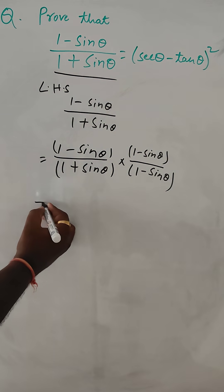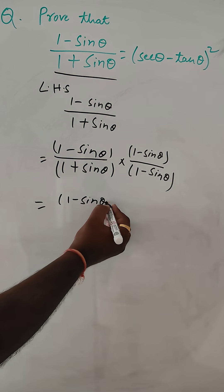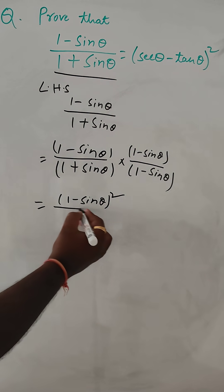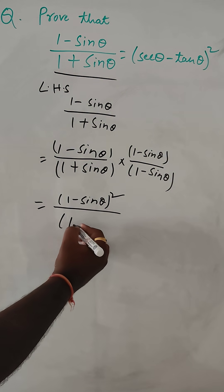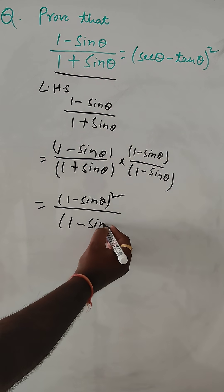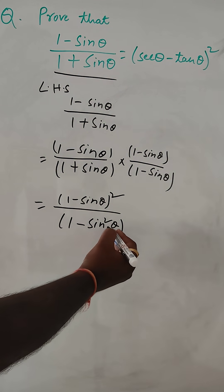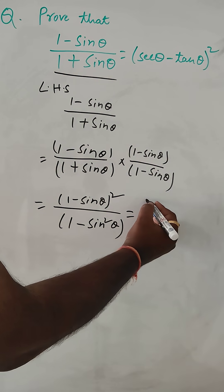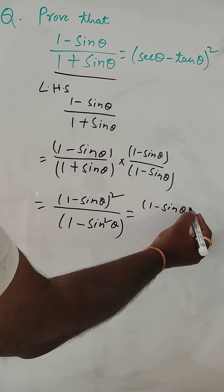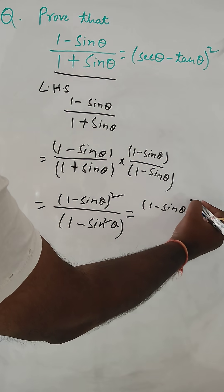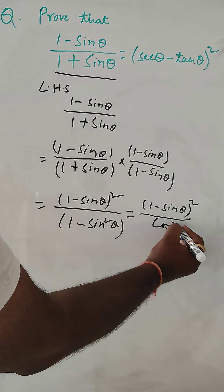This will be 1 minus sin theta whole square and this is A square minus B square formula. So, 1 minus sin square theta, and this sin square theta can be cos square theta. So, 1 minus sin theta whole square divided by cos square theta.